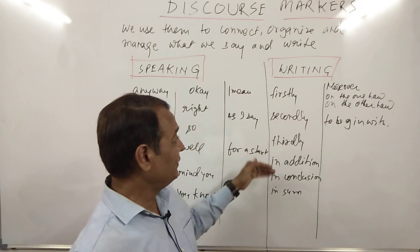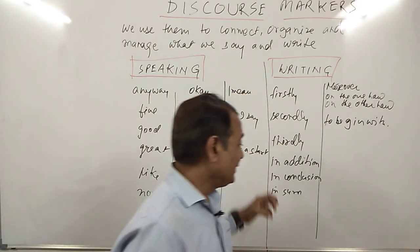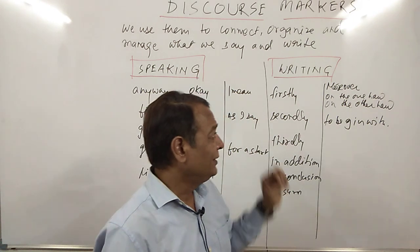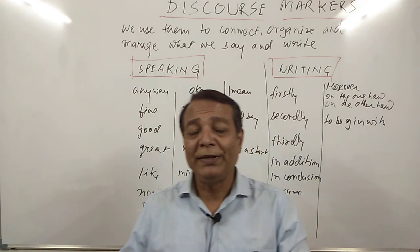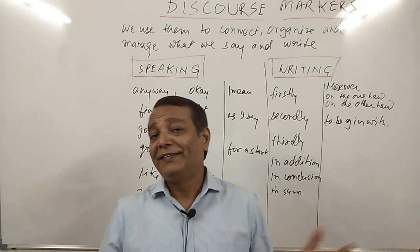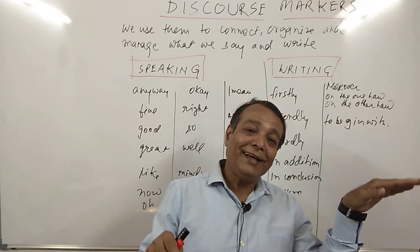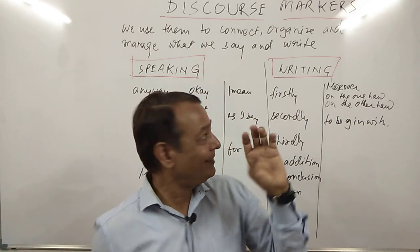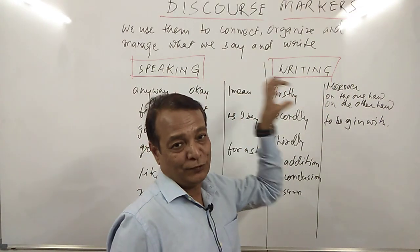We also use in writing: 'in addition', 'in conclusion', 'in sum', 'moreover', and 'on the one hand / on the other hand.' For example: 'On the one hand, he said that he would help me; on the other hand, when I asked him for help, he said he had no money.' So 'on the one hand / on the other hand' are written discourse markers.